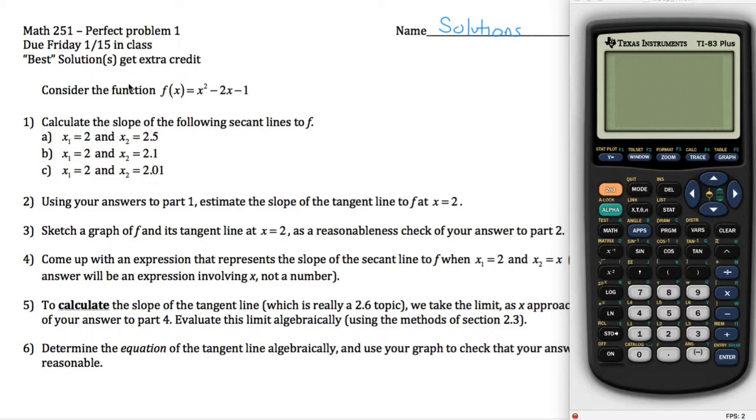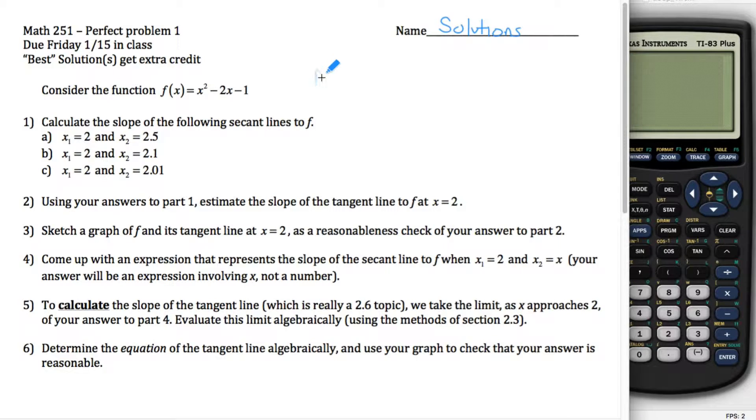Here are solutions to the first perfect problem for math 251. We are doing secant and tangent line stuff here. So you're given a function, f of x equals x squared minus 2x minus 1, and you're asked to calculate the slope of the following secant line.